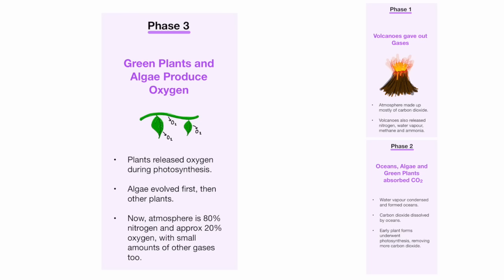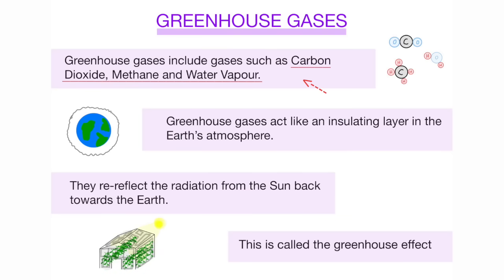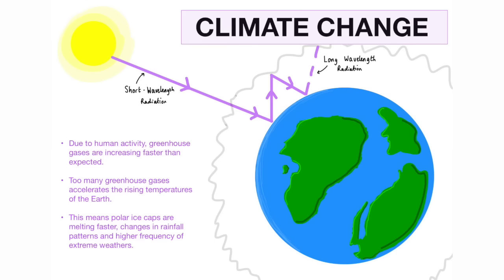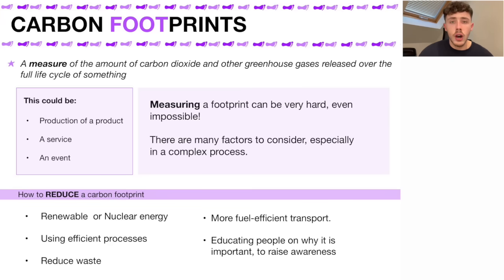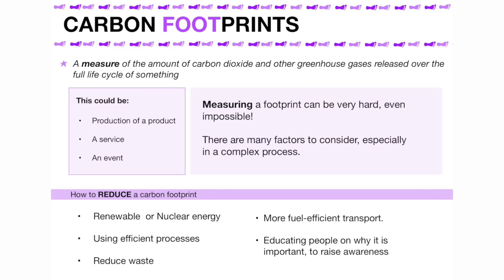Phase 3 is where green plants and algae produce oxygen — again through photosynthesis, the carbon dioxide is converted into oxygen, and now the atmosphere is balanced out to how we know it today. Next we have climate change and greenhouse gases. Greenhouse gases form a layer around the Earth which traps the sun's radiation inside our atmosphere — this is called the greenhouse effect. And finally, carbon footprints, which are a way to measure sustainability and something important to try and reduce as much as possible.